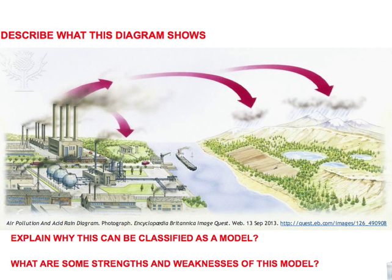I would like you to stop for a moment here and describe what this diagram shows. Think carefully about the two types of acid deposition that we've mentioned — dry and wet. Also think about why acid deposition is described as more of a regional issue between one country and another, for example between the UK and Europe or between Canada and the United States, and not an issue of global proportion like ozone layer depletion or the enhanced greenhouse effect. I also want you to explain why this can be classified as a model and what are some strengths and weaknesses of this model.